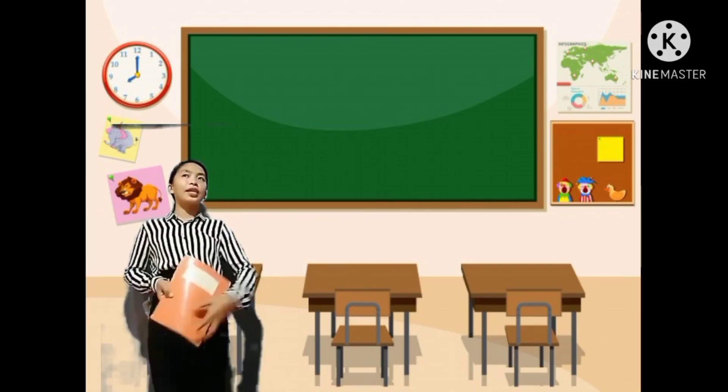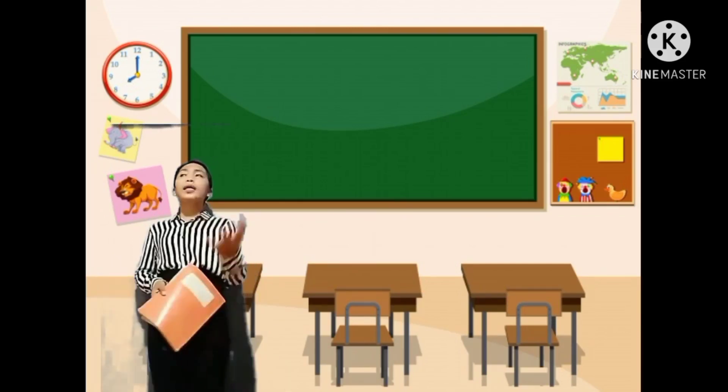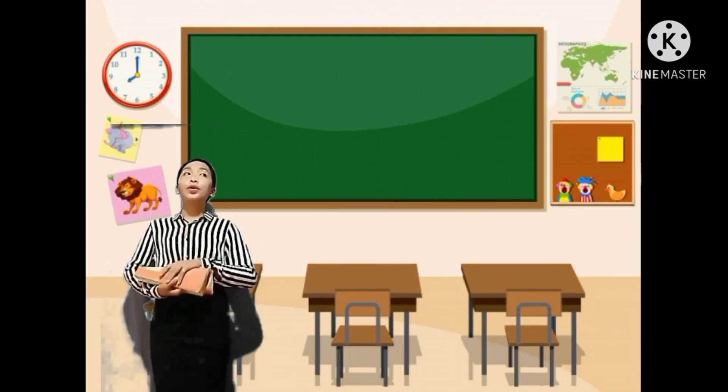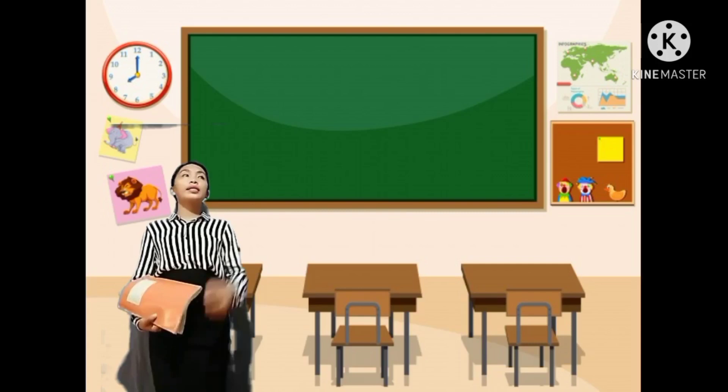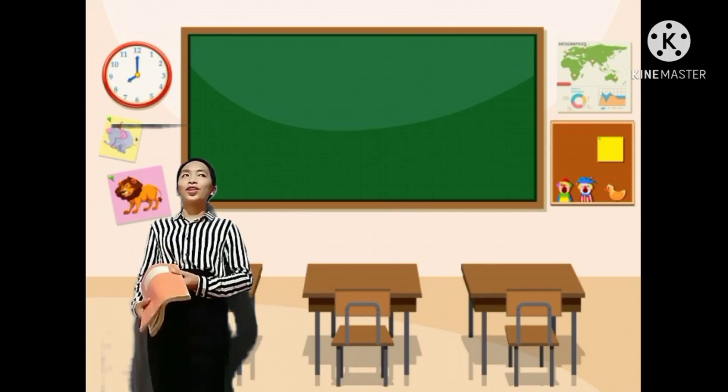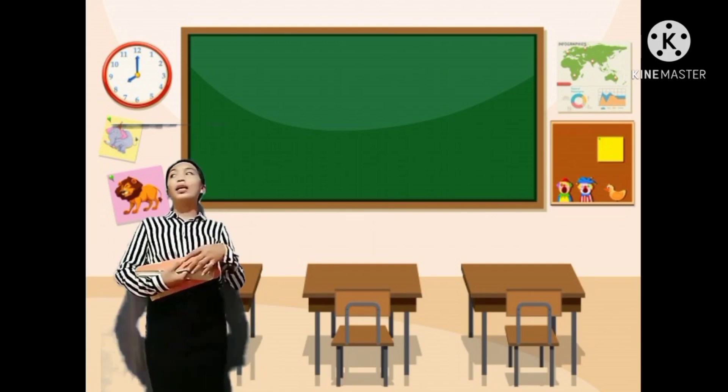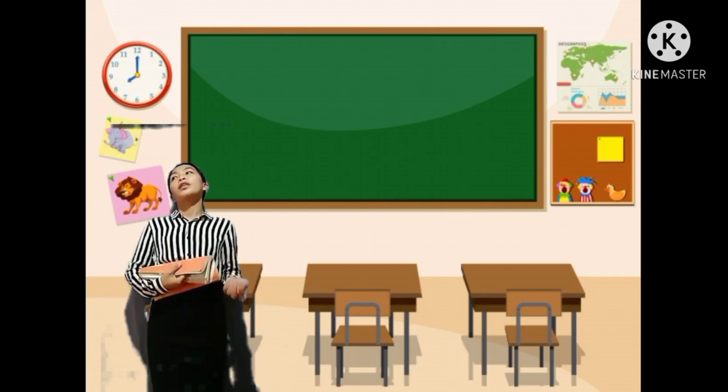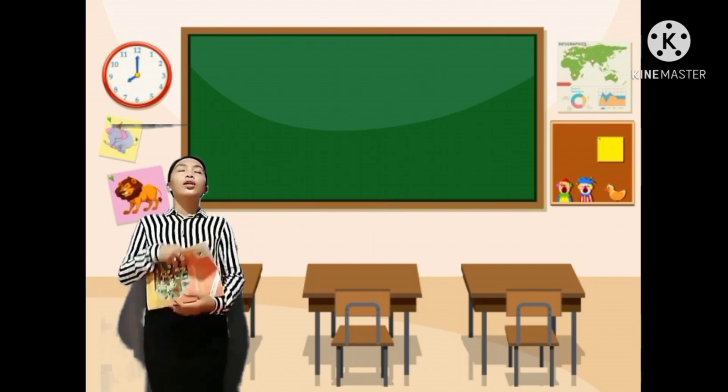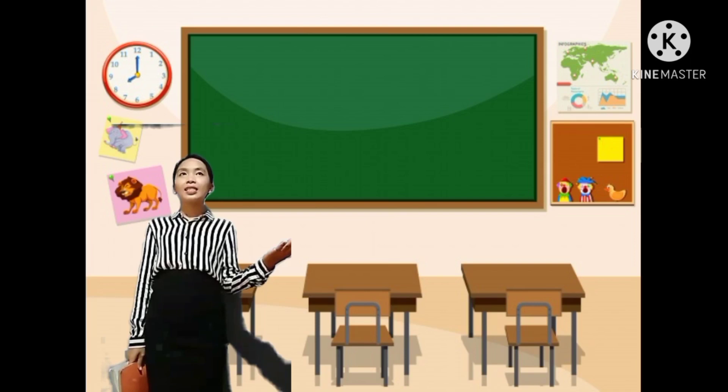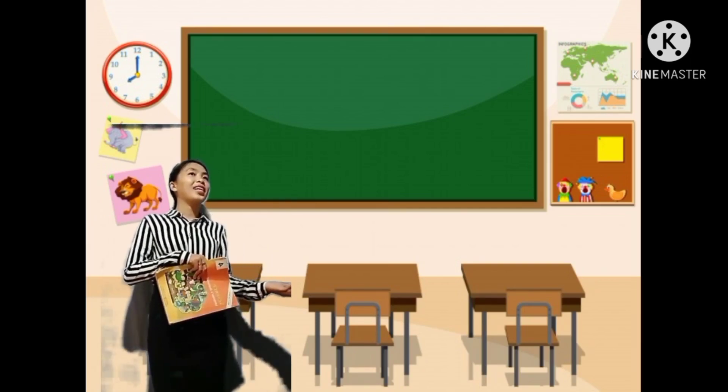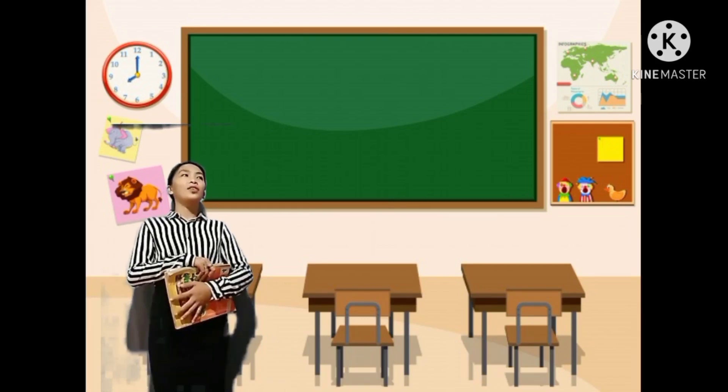And now, class, for our next activity, I am going to read some questions slowly. And in your sheet of paper, you are going to write AP if the statement signifies air pressure. And you are going to write H if the statement denotes humidity. Do you understand, class? Yes? Very good. Are you ready? Let's start.